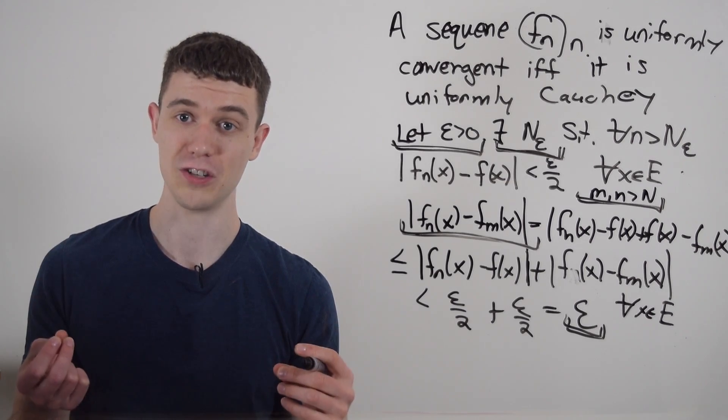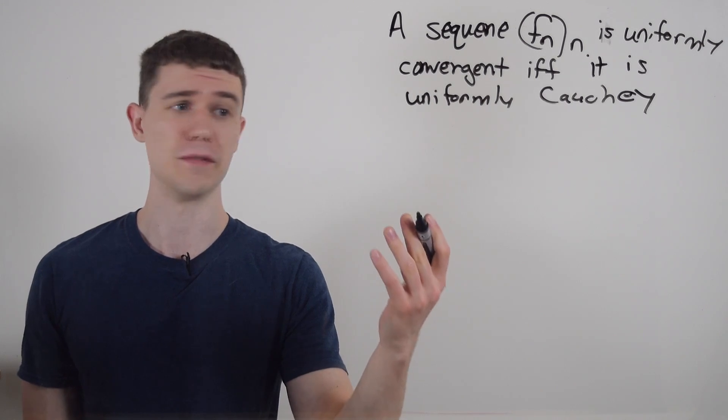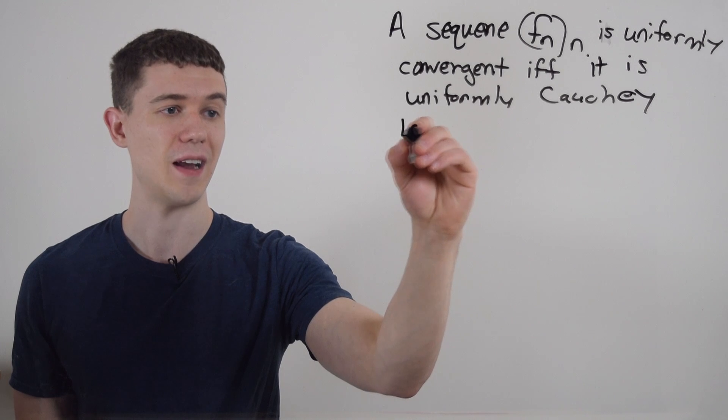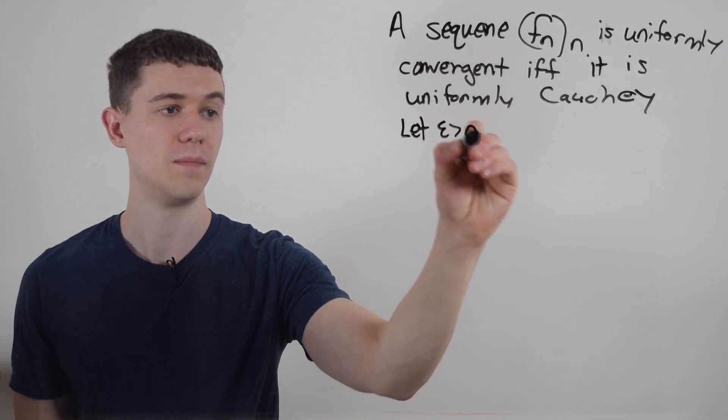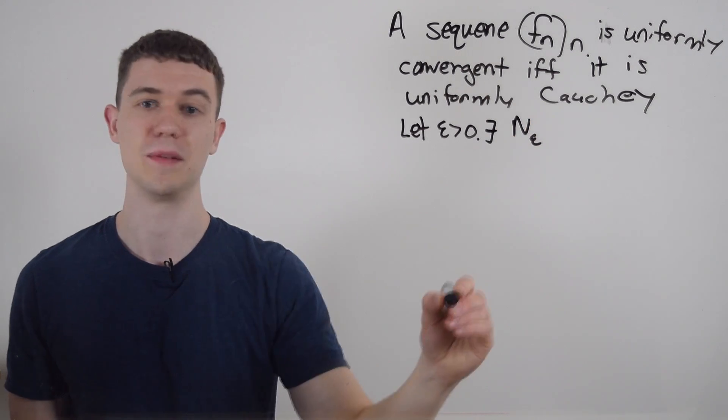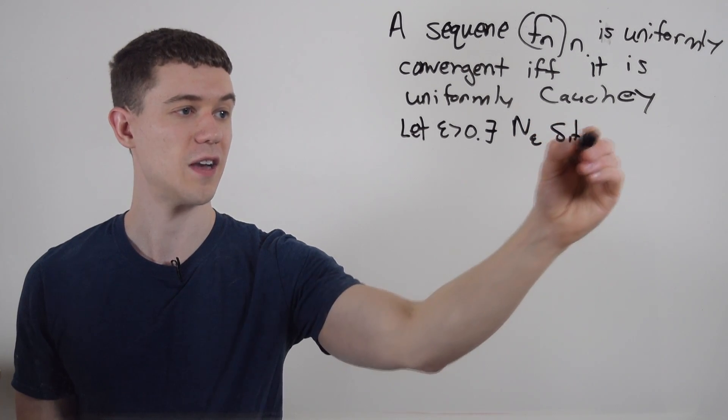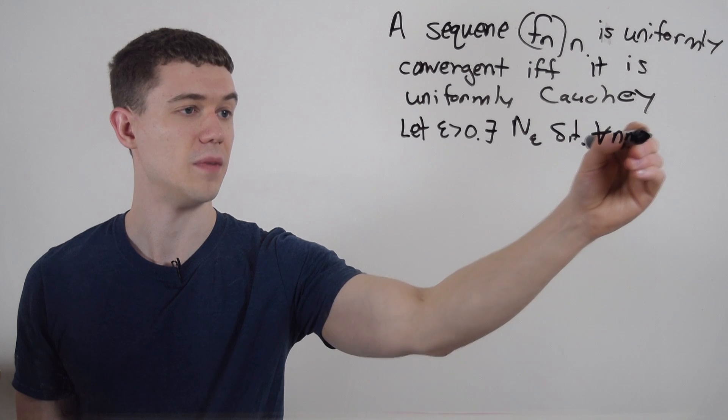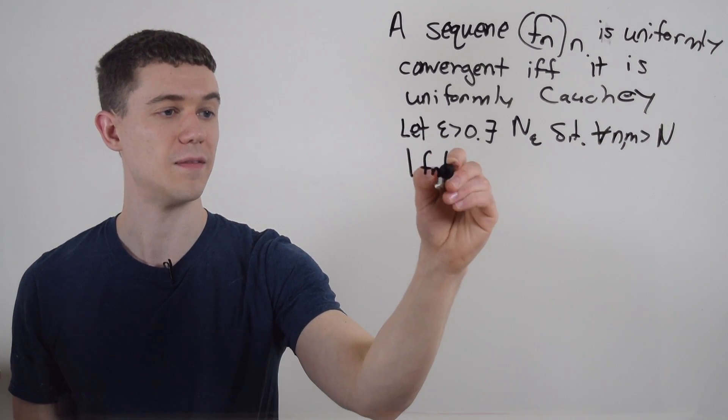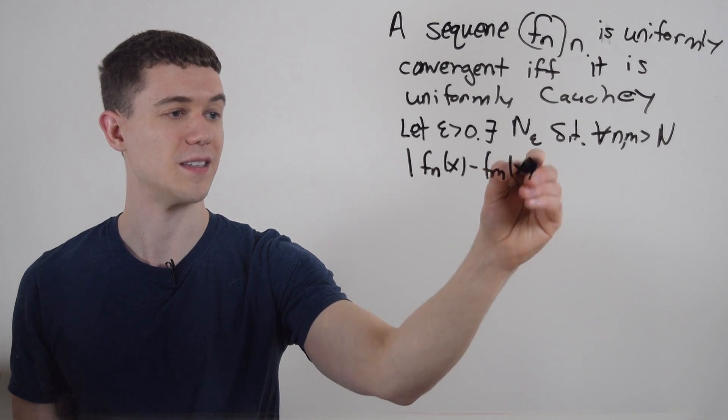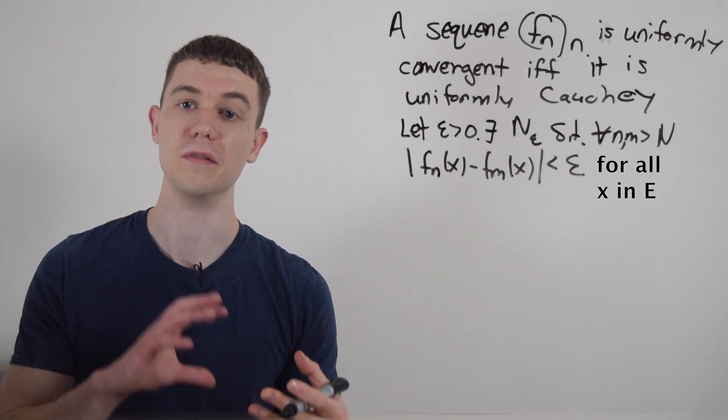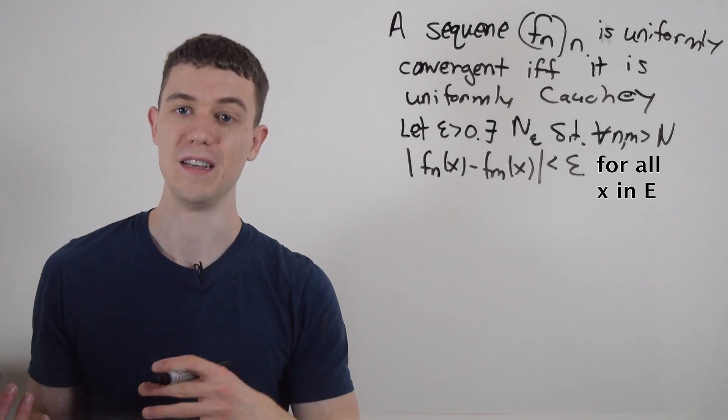Let's look at the reverse direction. This time, I'm going to assume that my sequence of functions is uniformly Cauchy, which means if I let epsilon greater than zero, then there exists some capital N depending on epsilon, such that for all n and m greater than N, the distance between f sub n of x minus f sub m of x is less than epsilon. And this is the definition of uniformly Cauchy that we just showed in the previous part.